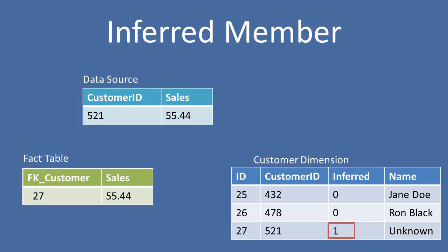You'll also notice we added a field to our customer dimension called "inferred." This is just so we can place a bit flag here to identify this record as being inferred. Later on, whenever this dimension gets updated and the source system actually provides the values for the attributes such as name, we'll update this record, mark it as not being inferred, and our fact is now able to relate to a dimension record which has all the attribute values available.